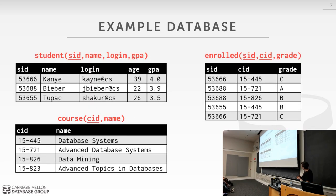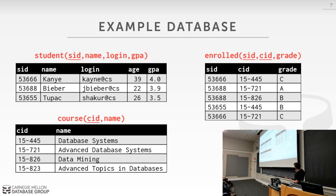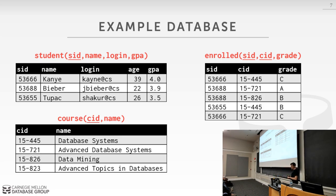For this we're going to use a sample database comprised of three tables — a mock university. We'll have a student table where students have student IDs, names, logins, and GPAs. We'll have a course table with course IDs and name. And then we'll have an enrolled table with a foreign key reference from the student table and the course table, along with the grade that the student got in the class.